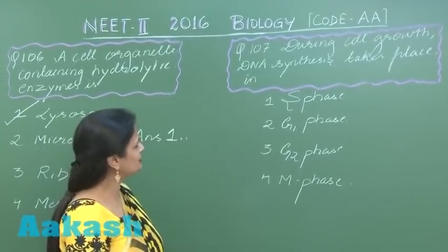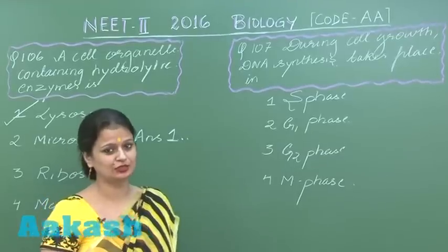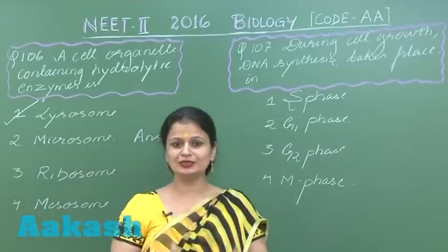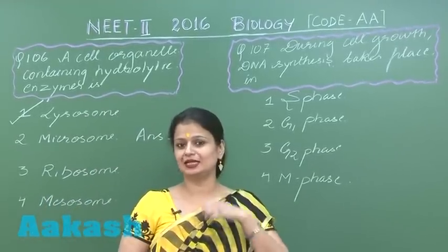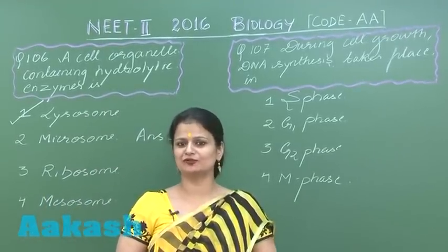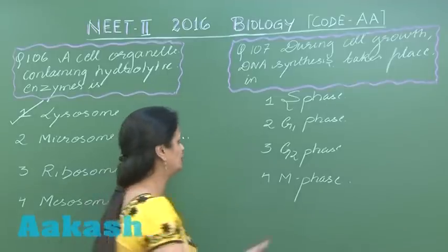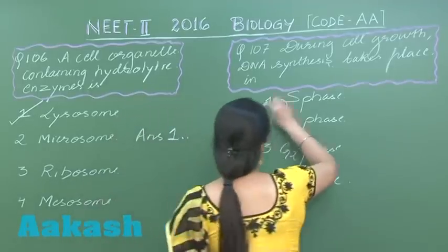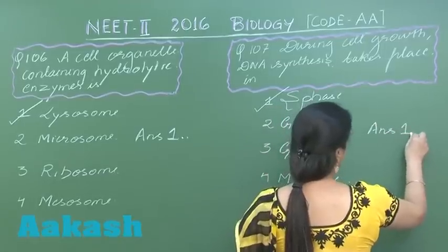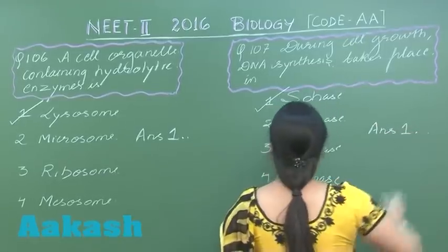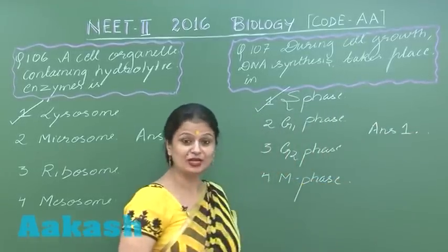Question 107: during cell growth, DNA synthesis takes place in which phase? This is a straightforward question — during the cell cycle, duplication of DNA occurs during the S phase. So the right option is option number one. We can now discuss question number 108.